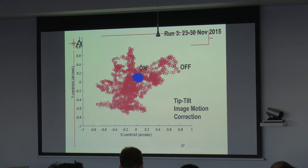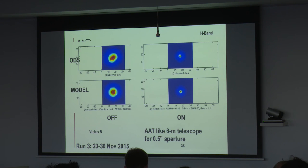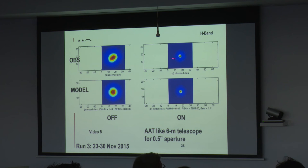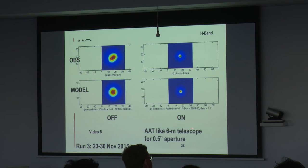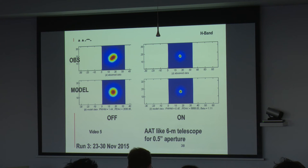On the second run we got better results. This is quite bad seeing — tip-tilt correction shows the centroid or image motion wandering to almost plus or minus one arcsecond, and when you turn it on you get much better image stabilisation. In the third run we got a lot better results with AO correction, going from 1.24 arcseconds down to 0.4 arcseconds — a big improvement. So the AAT performs like a 6-meter telescope with half an arcsecond performance. There's still a halo because we haven't got enough actuators — the Strehl ratio or encircled energy might be a factor of 2 or 3 lower — so there's still more work to do with more actuators or running faster.